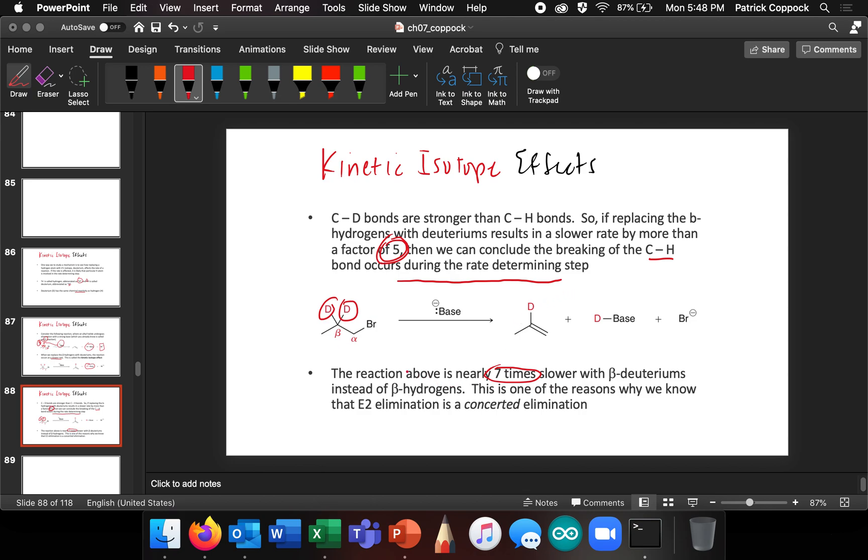So this reaction above is actually seven times slower, and this is one of the ways that we know that E2 elimination is a concerted elimination.